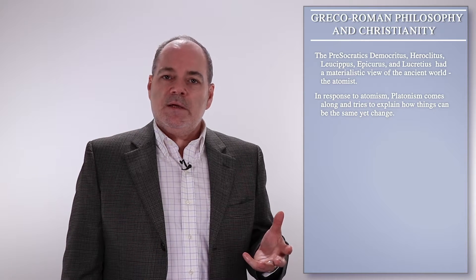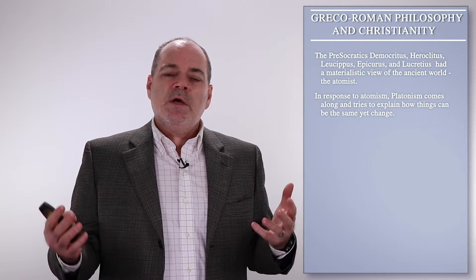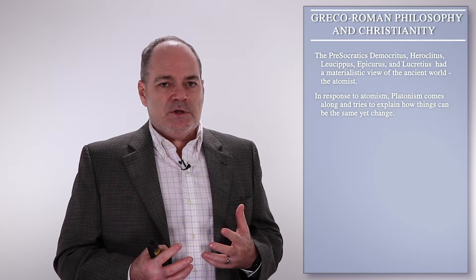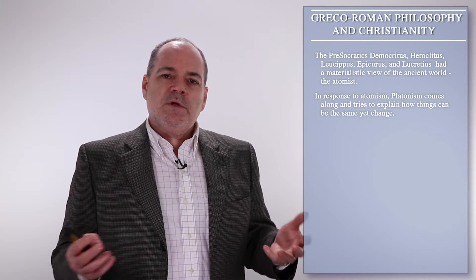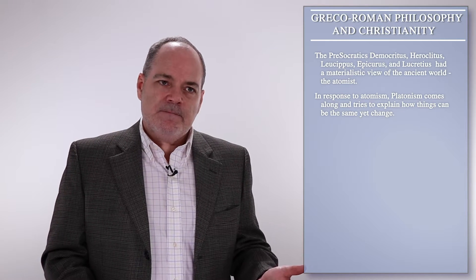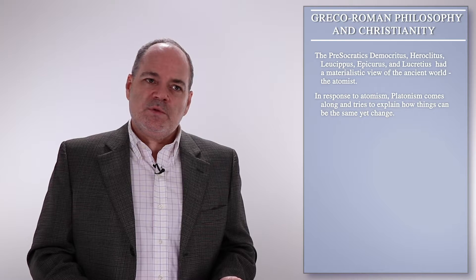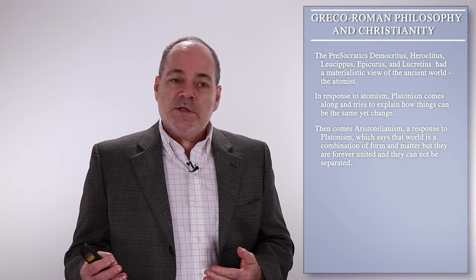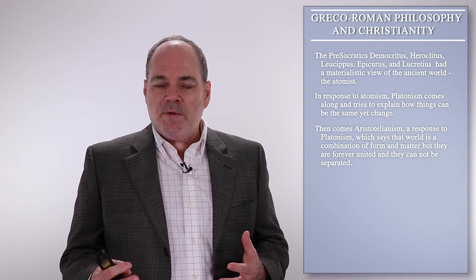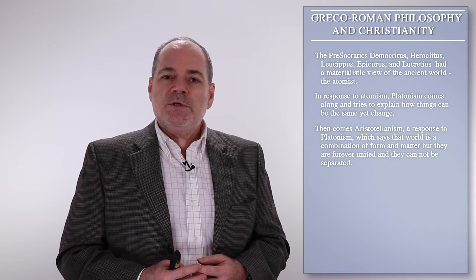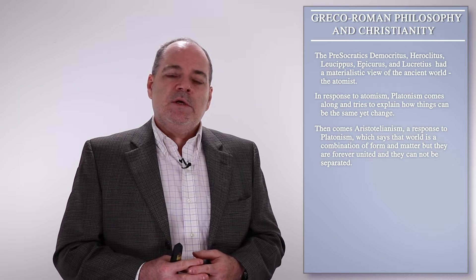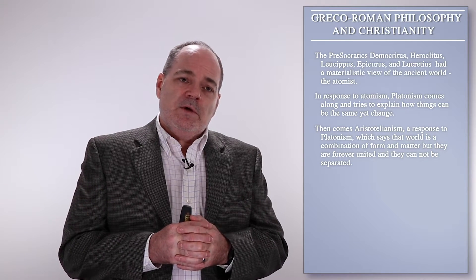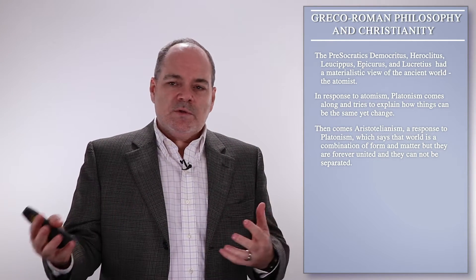In response to that, Platonism comes along and tries to answer the question of how things can be the same and yet change. There is a part of them that is unchanging — that is their ideal, their concept — but there is also the material part that is changing. Platonism is one of the great philosophical schools of the ancient world. Then along comes Aristotelianism, a response to Platonism and in some ways growing out of it, Aristotle being Plato's student. Aristotelianism would say that the world is a combination of form and matter, forever unified together and inseparable — universals only exist in things.